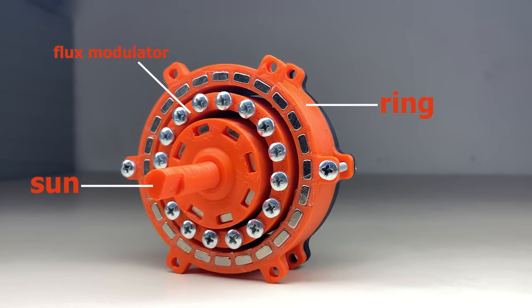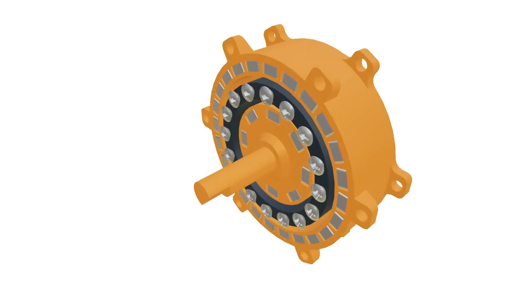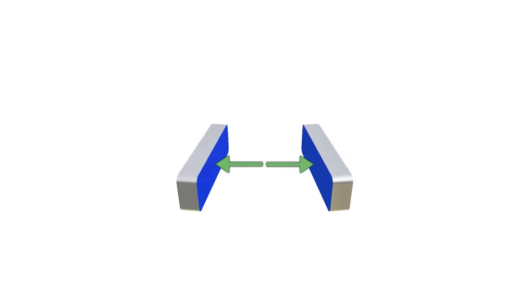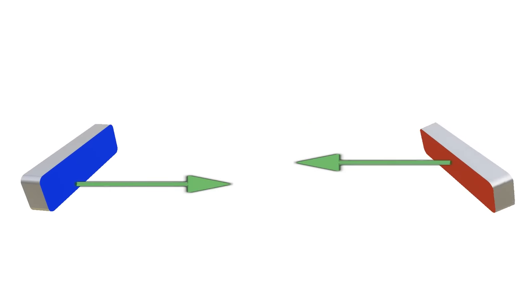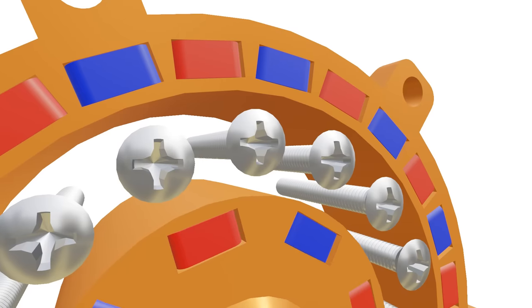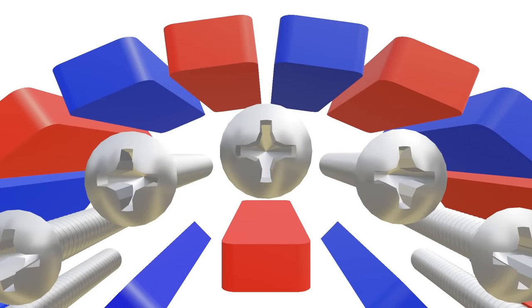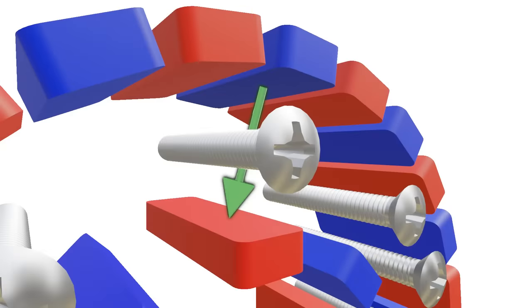Between them is a flux modulator that acts as planet gears. We know that a permanent magnet has two poles, north and south, and the same poles repel each other but opposite poles attract. In this case, when the sun gear takes a small step and aligns with the next iron segment in the modulator, it attracts the south pole on the ring gear towards itself. Simultaneously, it repels the north pole which is right next to it.